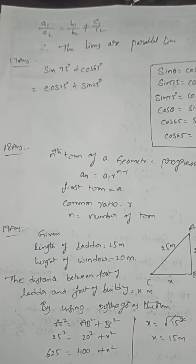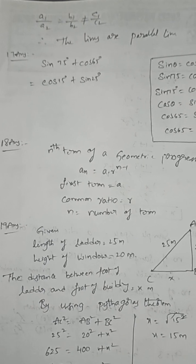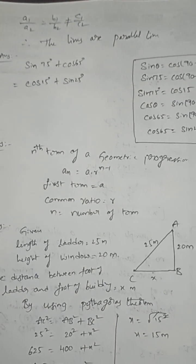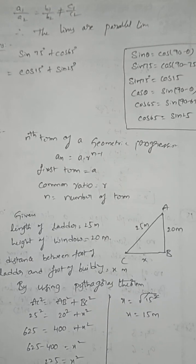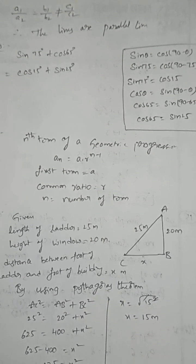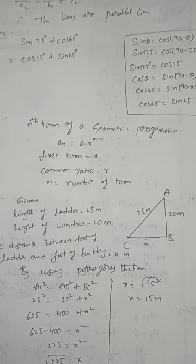sin 75° + cos 65°. Change into complementary angles: cos 15° + sin 25°. sin θ = cos(90° - θ), cos θ = sin(90° - θ).